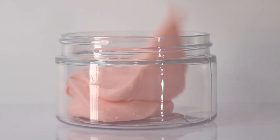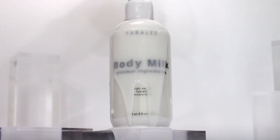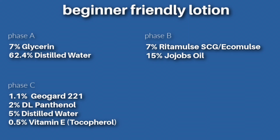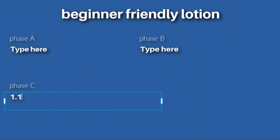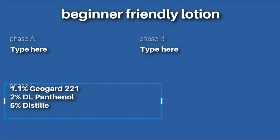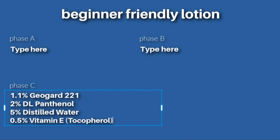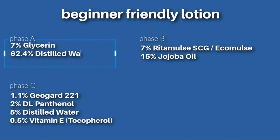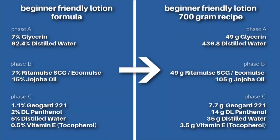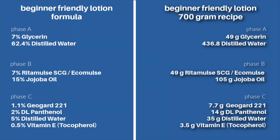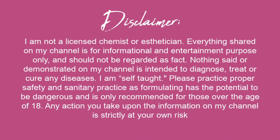No matter what product you're formulating, you first need to write a formula in percents, and that entire formula needs to add up to 100%. You first start out creating your lotion formula, and you use that formula to create a recipe. There is a difference between a formula and a recipe, and we'll talk about all of that today.